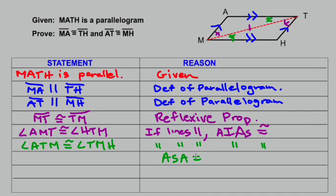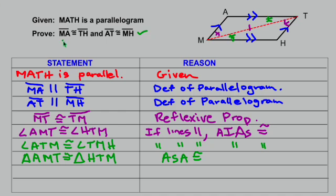So I'm going to write angle-side-angle congruence. Starting at A, going to M, going to T — triangle A-M-T is congruent to triangle H-T-M by angle-side-angle. You'll notice at this point we've got almost everything filled out on our two-column proof. Now we need to finish what we set out to prove. We know the triangle on the top left and the bottom right are now congruent, and once we know that, any side or angle that are corresponding to each other that we've yet to talk about are going to be congruent as well.